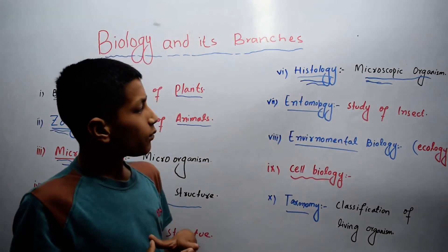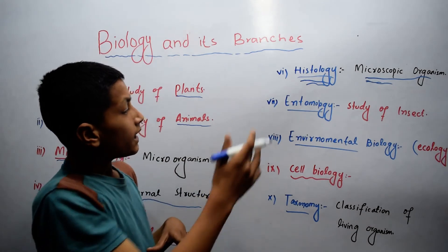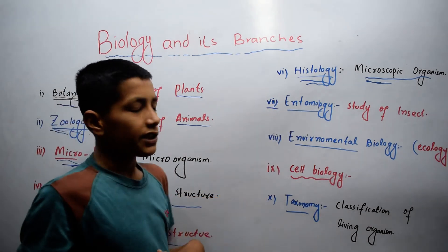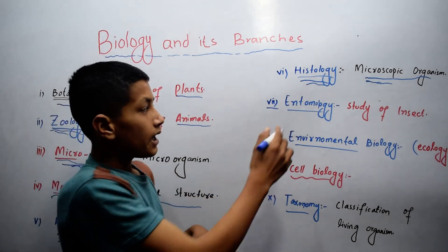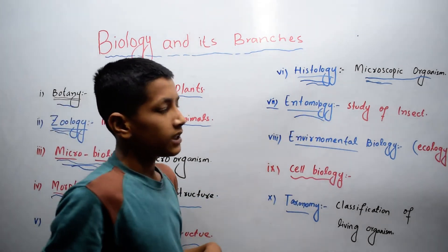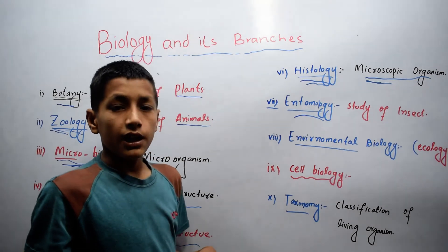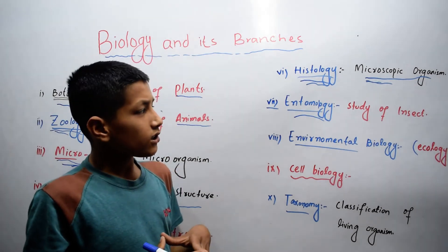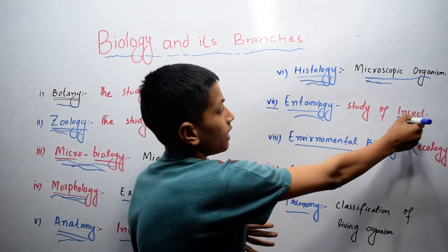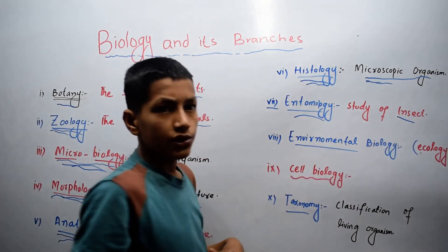Let's come to the seventh branch of biology, which is entomology. Entomology is the branch of biology that deals with the study of insects.